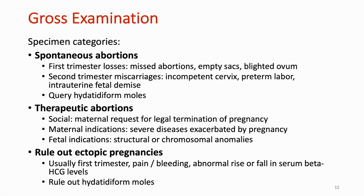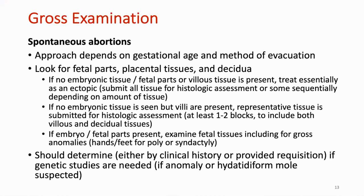So what are we looking for? What we're looking for depends a bit on the clinical scenario and can be divided into three specimen categories, including spontaneous abortions, therapeutic abortions, and rural ectopics. If we focus on spontaneous abortions, the approach will depend on the gestational age and method of evacuation. You basically want to look for and identify things like fetal parts, villi or placental tissues, and decidua if present. How much tissue you submit will depend on various factors. You want to confirm that there was indeed an intrauterine pregnancy and to rule out other things such as trophoblastic disease. You also want to determine if you need genetic studies, if an anomaly or molar pregnancy is suspected.